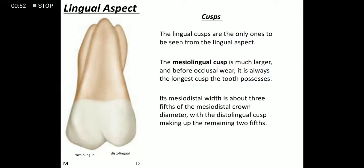The depression fades somewhere near the middle third of the lingual root. From this aspect we can see only the lingual cusps — the mesolingual and the distolingual cusp. The mesolingual cusp is the largest and longest cusp, but due to occlusal wear it does not remain the longest throughout its life. If we divide the cusp region into five parts, three parts will be occupied by the mesolingual cusp and the remaining two by the distolingual cusp.